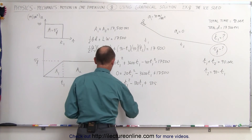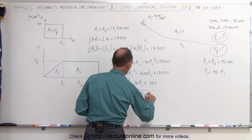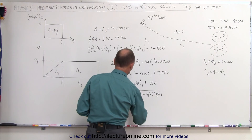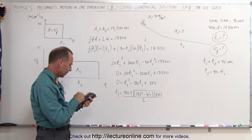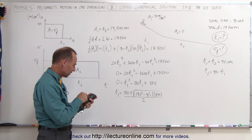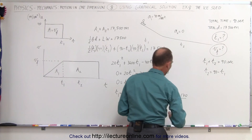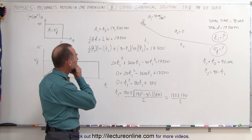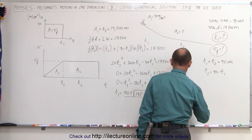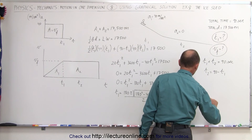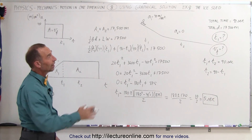We solve using the quadratic formula: t1 equals negative B, which is 180, plus or minus the square root of 180 squared minus 4 times 1 times 875, all divided by 2. Computing 180 squared minus 4 times 875, then taking the square root gives 170. So t1 equals 180 plus or minus 170, divided by 2. Adding gives a time longer than 90 seconds, which is not plausible, so we subtract: 180 minus 170 equals 10, divided by 2 equals 5 seconds. So t1 equals 5 seconds — the time needed to accelerate the sled over the 17,500-meter trip.